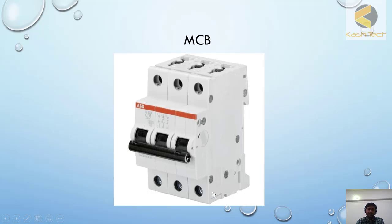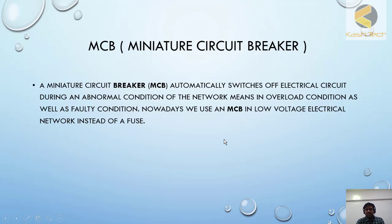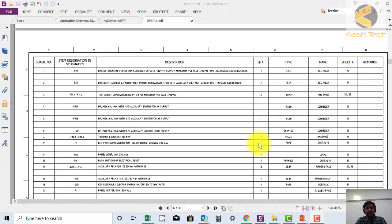The MCB also has an auxiliary contact which can be attached. This contact is connected — you can see the black color, there is a point available here. When the MCB opens and closes, the auxiliary contact also changes position. This is a brief introduction about the MCB.